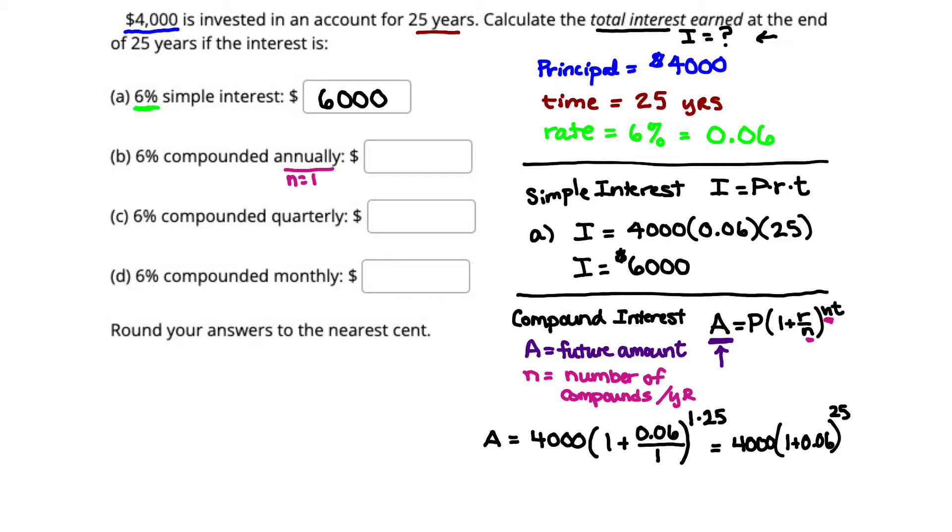We're going to raise that to the 25th power, and we're going to multiply that by 4,000. So you can do it on a scientific calculator, or you can plug it into Desmos, or any other graphing calculator, or any other tool you have available to you online, or just handheld. So you're going to take 4,000 times (1 plus 0.06), raised to the 25th power. And I get that the future amount, or our A value, is $17,167.48.